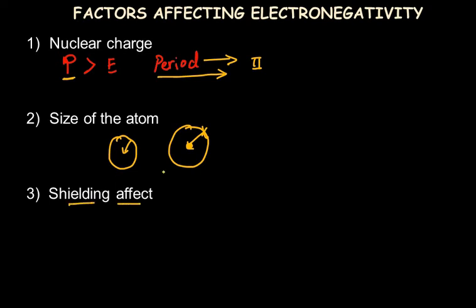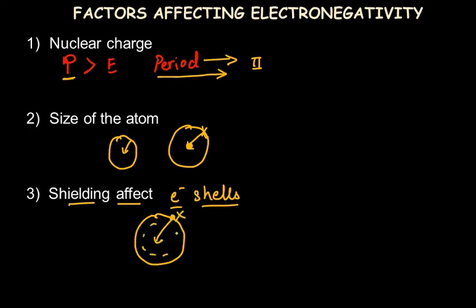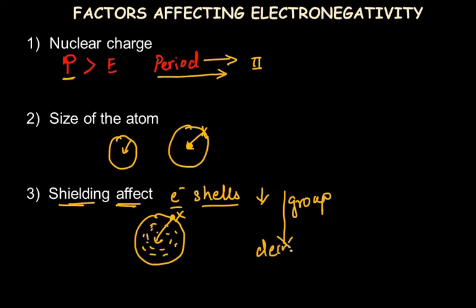The third factor is the shielding effect — how many electron shells exist between the outer shell and the nucleus. The greater the number of inner electron shells, the harder it is for the nucleus to attract the outer electron, because the inner electrons hinder that attraction. So greater shielding means lower electronegativity. This is why down the group, as both atomic size and shielding effect increase, electronegativity decreases. The three factors are: nuclear charge, size of the atom, and shielding effect.